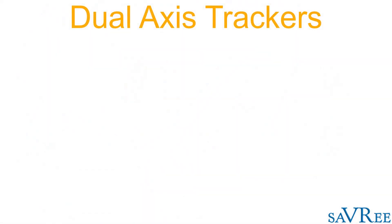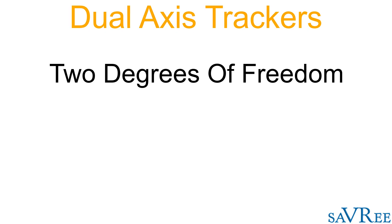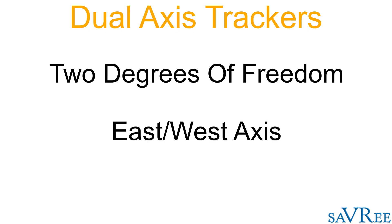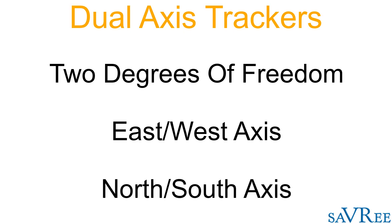The final type of solar tracker is the dual axis solar tracker, which is able to move with two degrees of freedom. So the dual axis solar tracker is able to track the sun on an east to west axis and also a north to south axis. Although a dual axis solar tracker is able to track the sun more accurately than a horizontal or vertical type solar tracker, there are some advantages and disadvantages with this type of tracker, which is why it has not found widespread commercial application. We'll discuss those advantages and disadvantages later in the video.